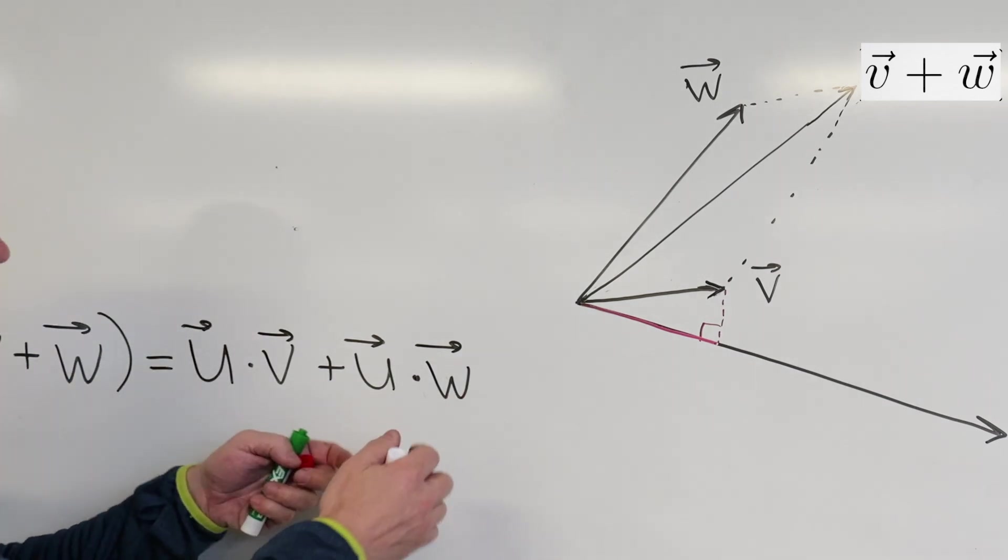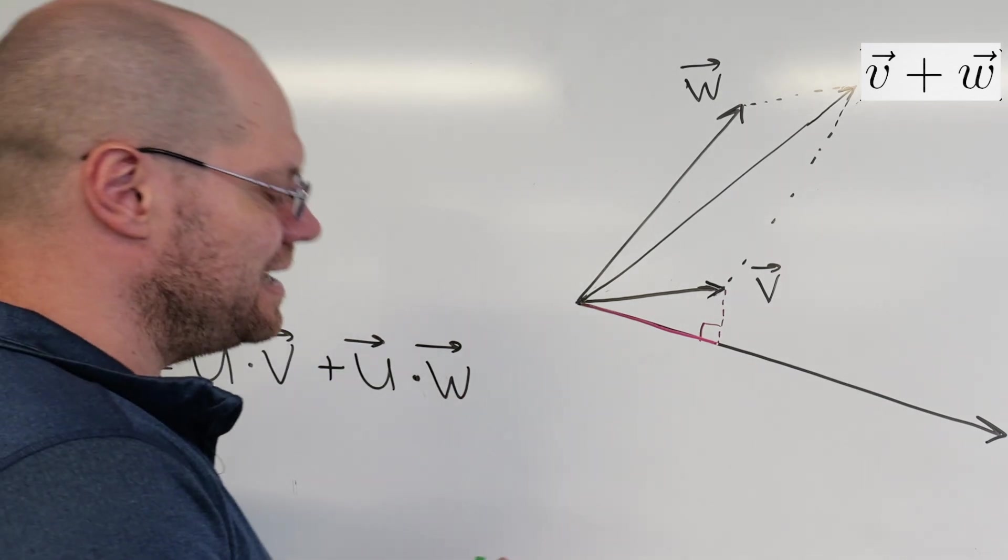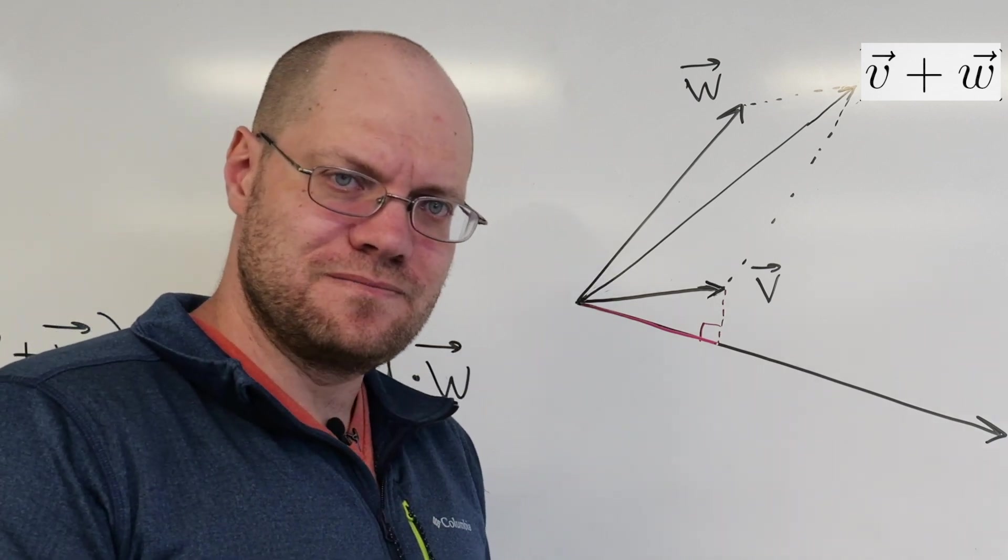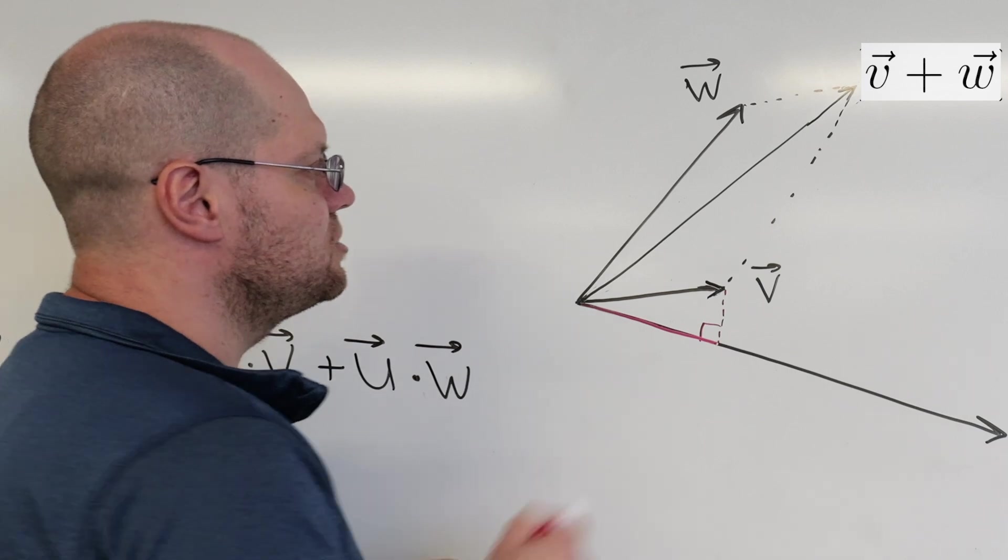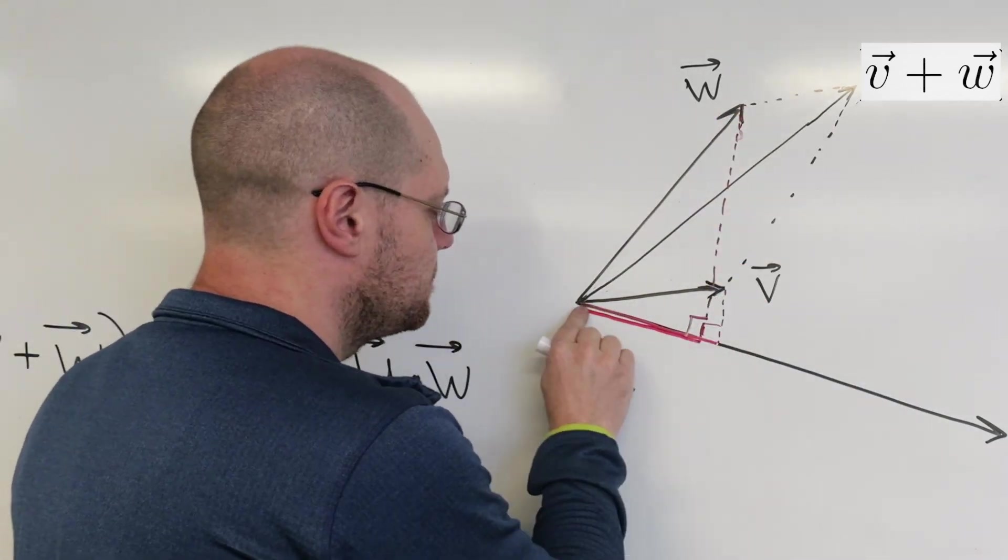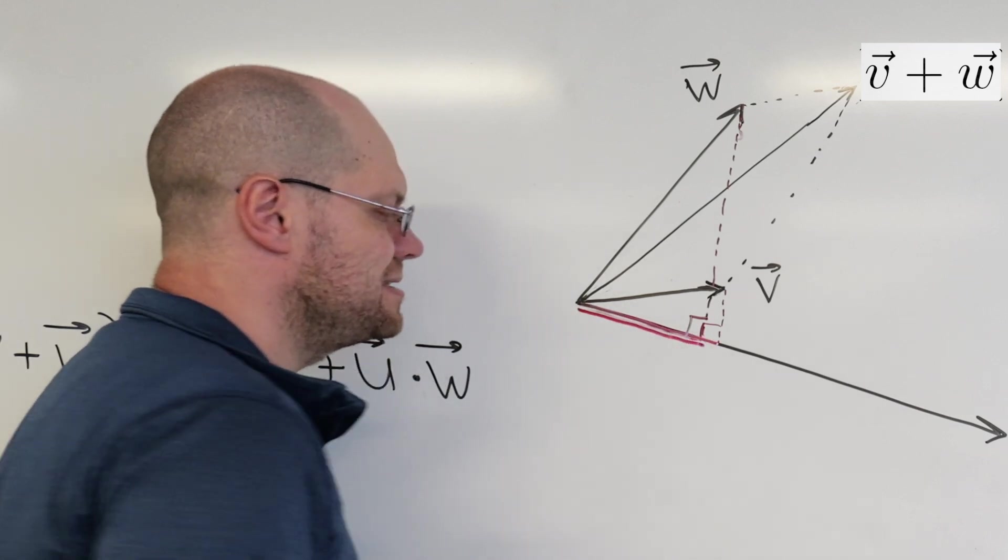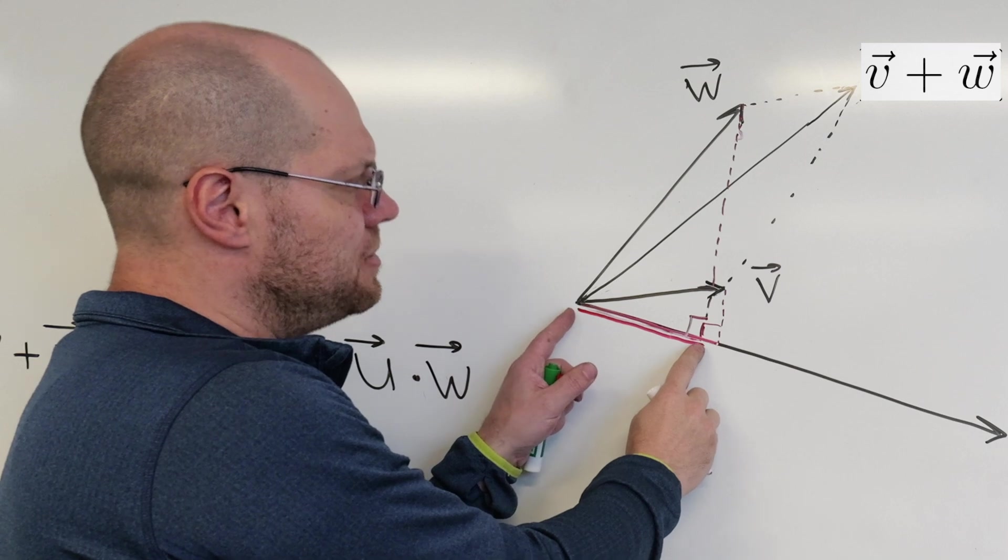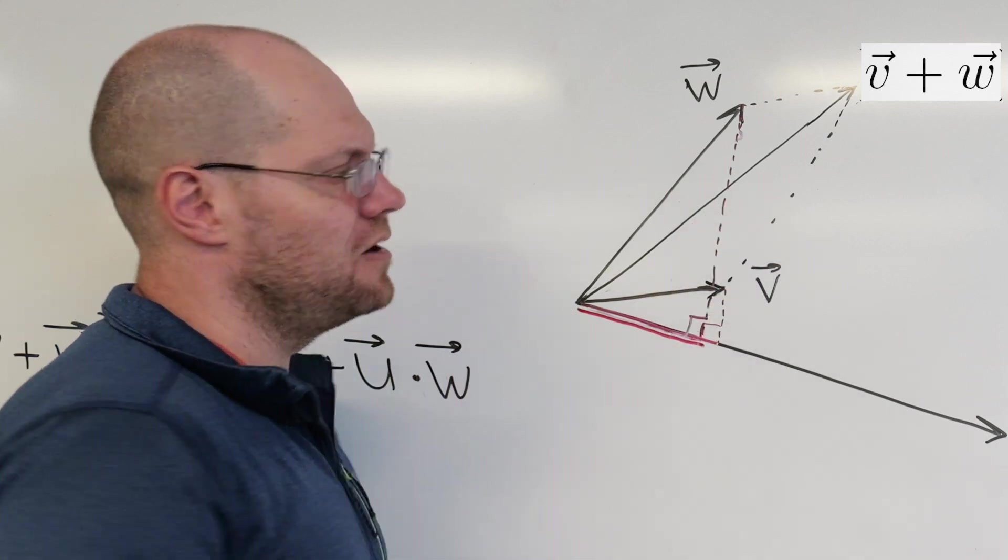So U dotted with V is the length of the projection of V onto U times the length of U. So I guess what I'm trying to say is that this length we need to pay attention to. And even though in the dot product it is also multiplied by the length of U, that will be the case for all the dot products. Okay, now let's look at U dotted with W. Well, that's the length of the projection of W onto U times the length of U. Let's draw that.